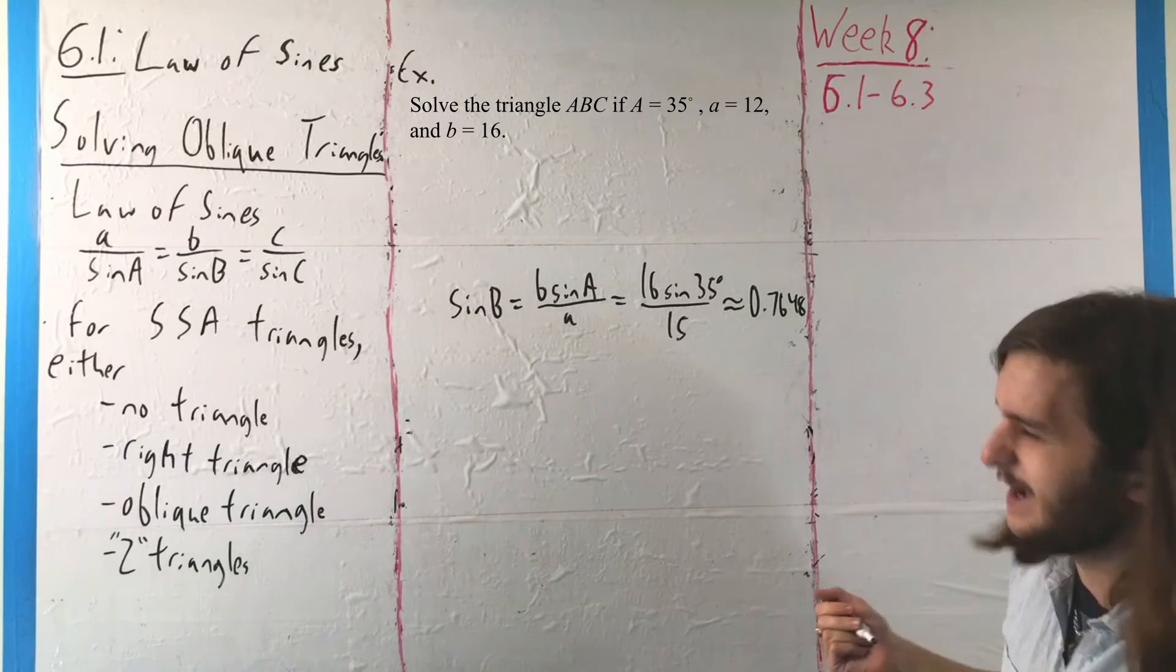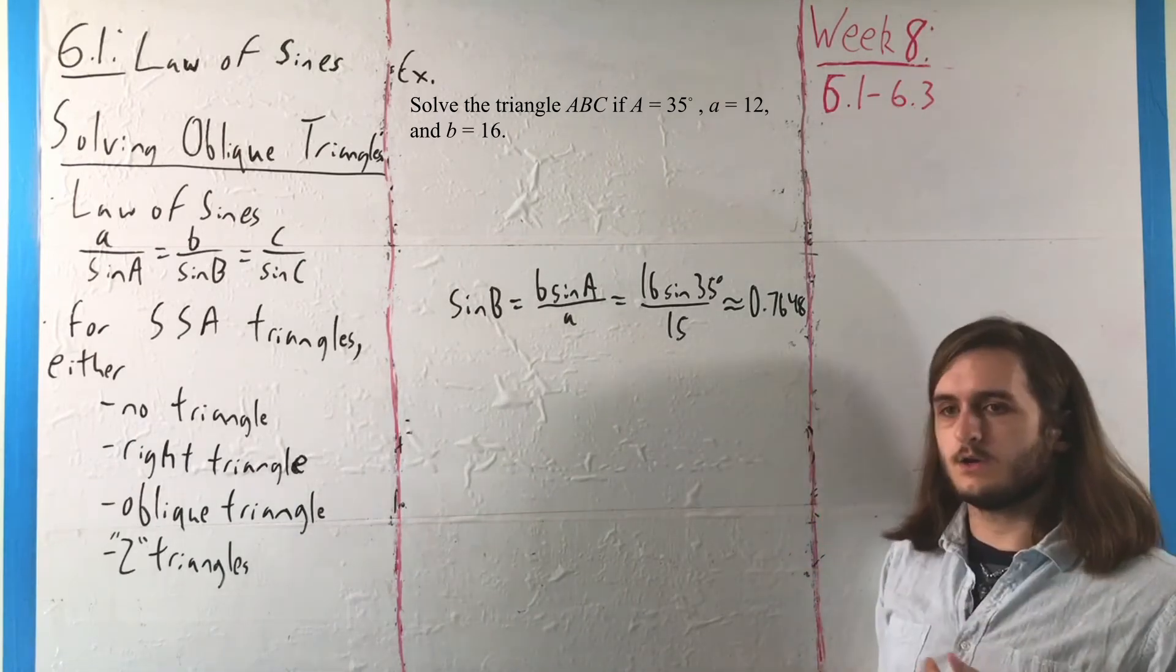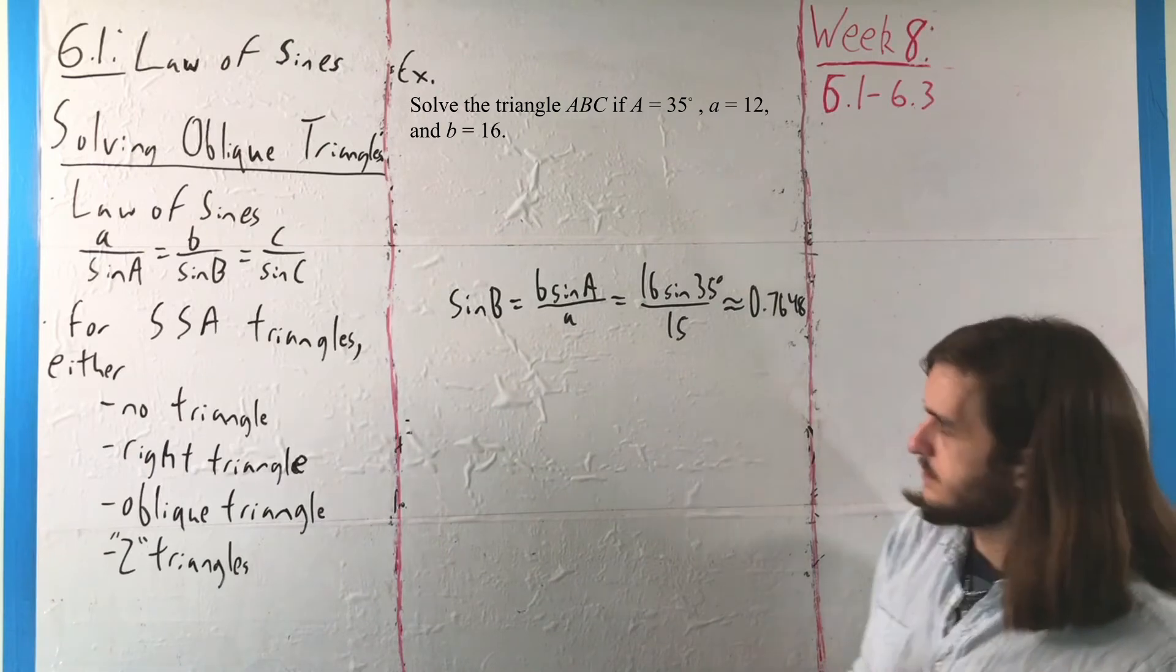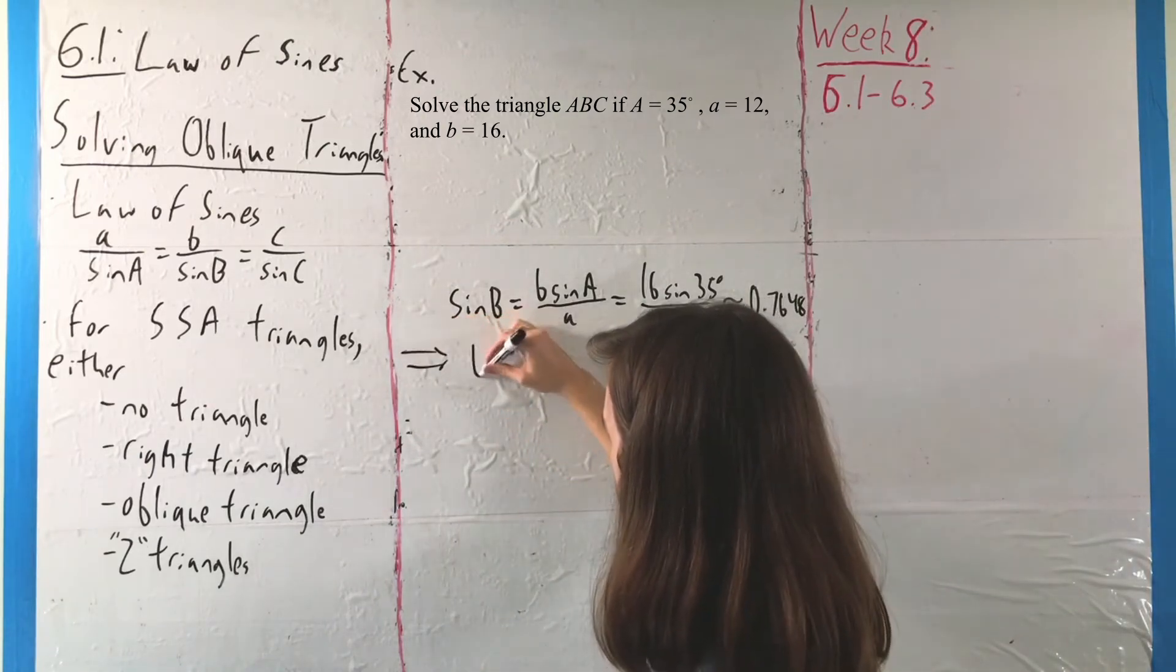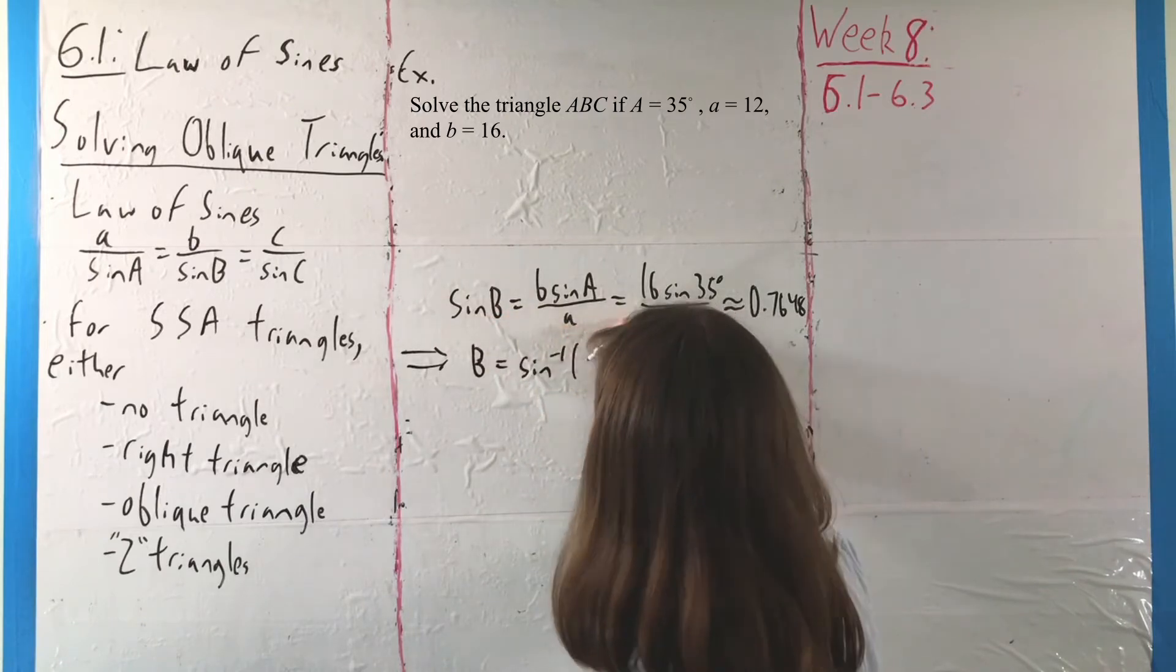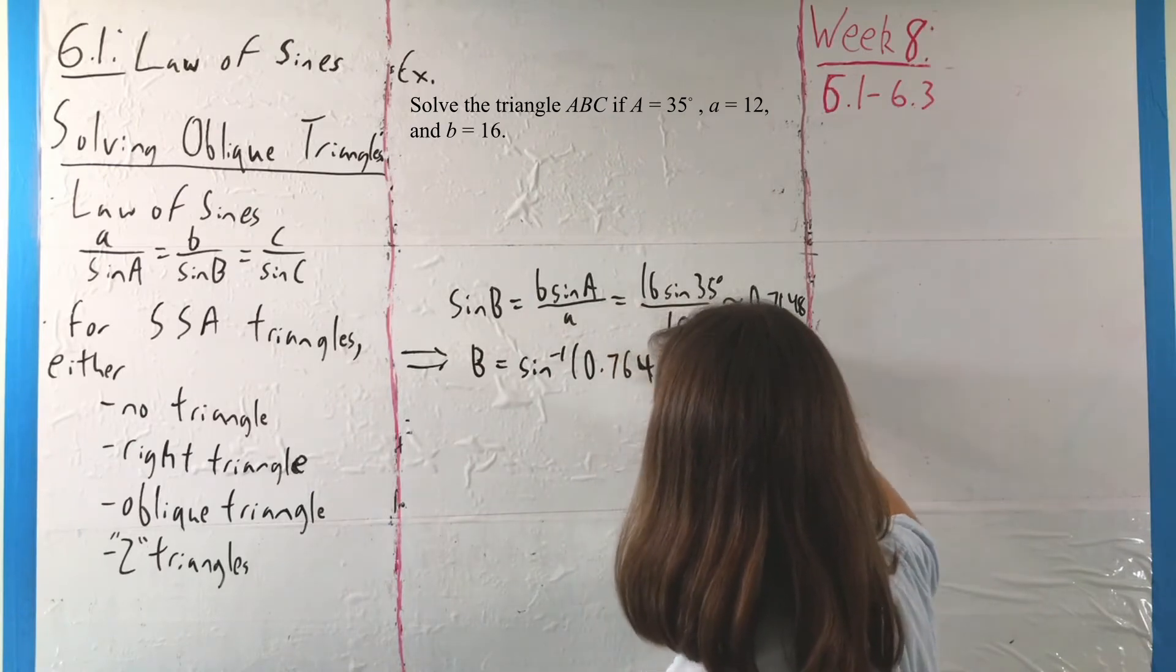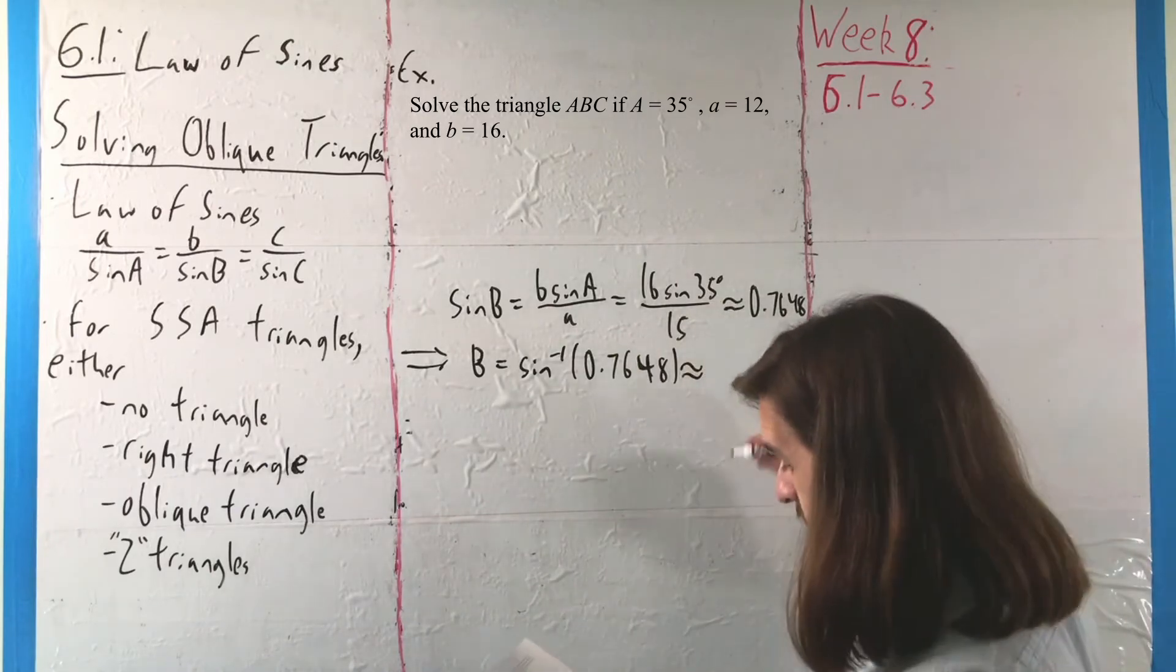So this is actually fine, it's just not very nice. You can get that value from the sine function, it's just not so nice, but we can use an inverse function to get that B is equal to inverse sine of 0.7648. That is, B is approximately 50 degrees.